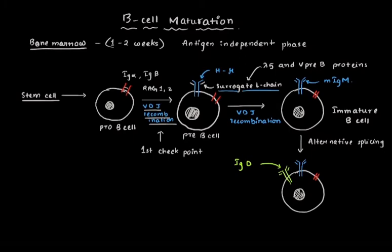This cell, which is having the IgM, the IgD, and also the Ig-alpha and Ig-beta, this cell is referred to as the mature naive B-cell.